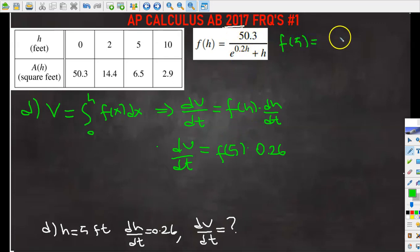And also we need to evaluate this expression when the height is 5, which means dV over dt is going to be equal to f of 5 times dh over dt, which is 0.26. So you're going to take this 5 and go back and calculate f of 5. So substitute right here, we get 50.3 over e to the power of 0.2 times 5, which is 1, plus 5. And if I use the calculator to evaluate this expression and multiply it by 0.26, we're going to end up with 1.694.